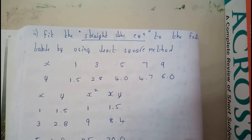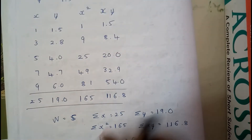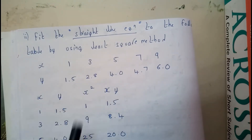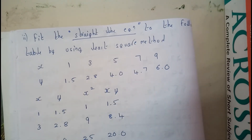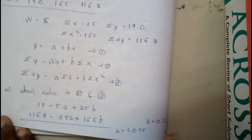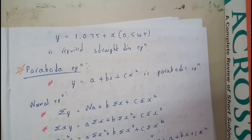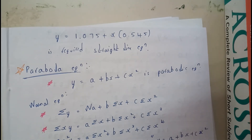This is another given question with the same straight line equation setup with five entries, so n equals 5. Substitute the values x, y, x squared, xy into the normal equations, get the values of a and b, and substitute them in the straight line equation — that's it. I hope everyone is now 100% clear with straight line equation. In the next tutorial we will be going through the parabola equation. Thank you for watching.